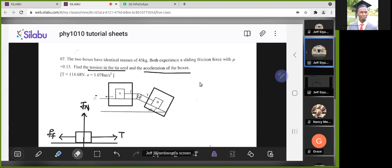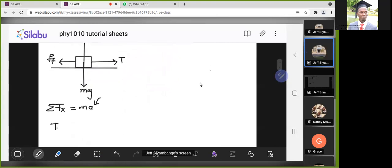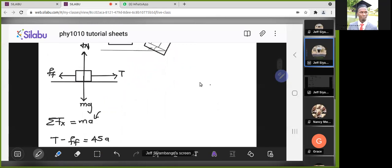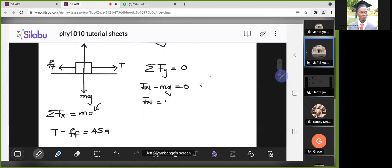So tension is to the right, positive. Friction to the left, negative. This is equal to the mass, which is 45 times the acceleration a. In the y-axis, the sum of forces in the y-axis equals ma in the y-axis. It's not going up, it's not going down, so this equals zero. Two forces there: Fn going up, positive. Mg going down, negative, equals zero. So Fn has to equal Mg.